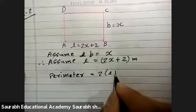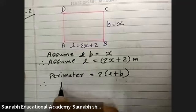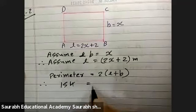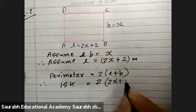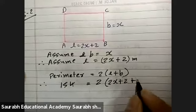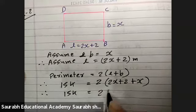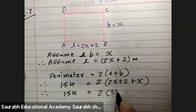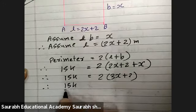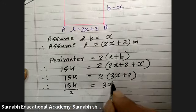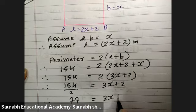Perimeter equals 2 into l plus b. 154 equals 2 into length 2x plus 2 plus breadth x. So, 154 equals 2 into 3x plus 2. 154 by 2, 77 equals 3x plus 2.